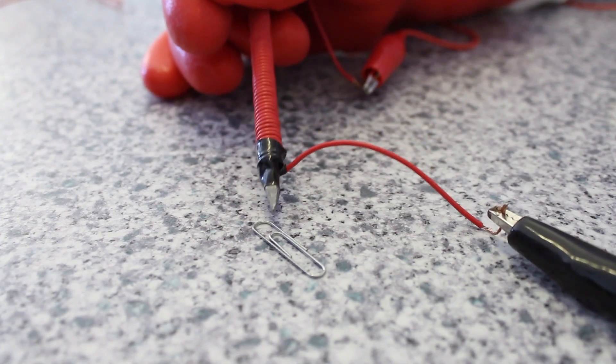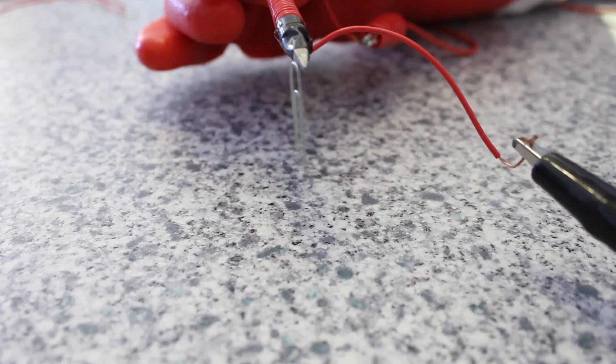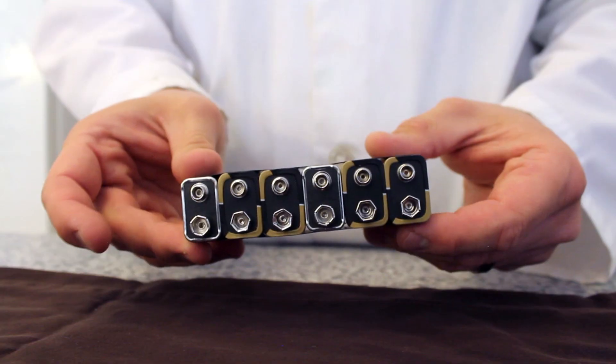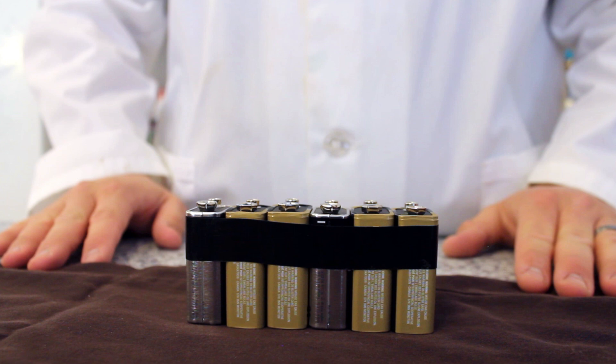With only one battery attached to our electromagnet, we're able to pick up objects about the size of a large paper clip. But we want a stronger electromagnet than that. To create a stronger electromagnet, start by taping together six batteries positive to positive and negative to negative like so.